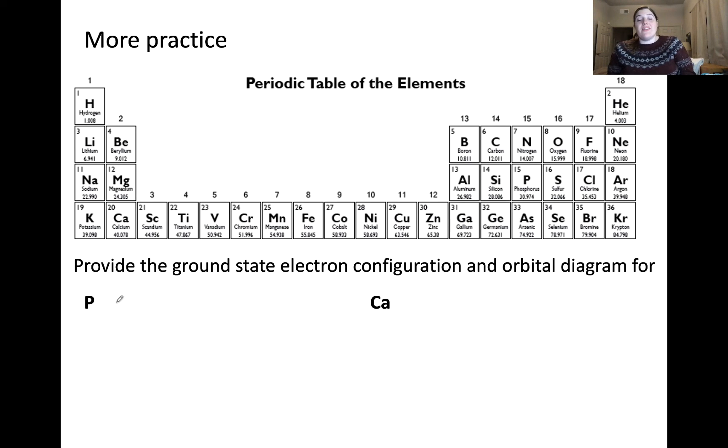Let's start with phosphorus. I personally like to write down the number of electrons to start. And then write the electron configuration starting from 1s. So 1s1, 1s2, 2s2, 2p6, 3s2, 3p1, 2, 3. So we can write the full configuration if we'd like. 1s2, 2s2, 2p6, 3s2, 3p3.